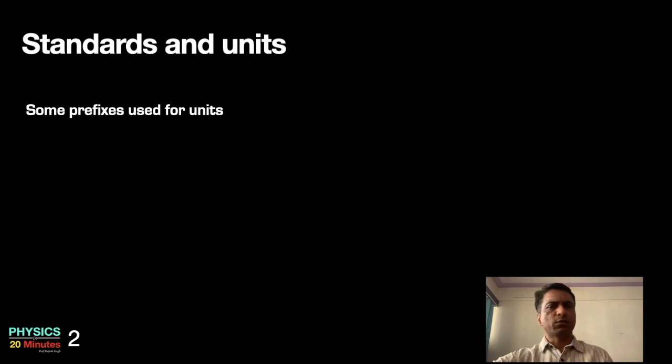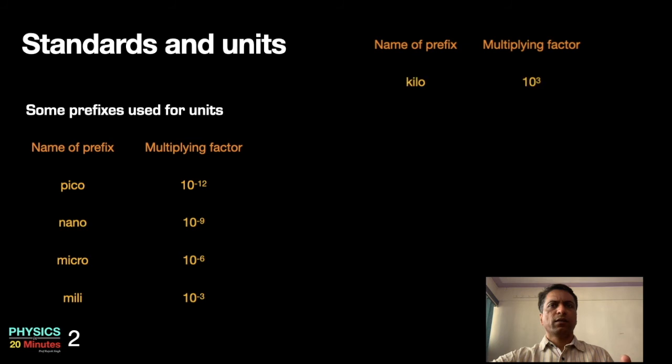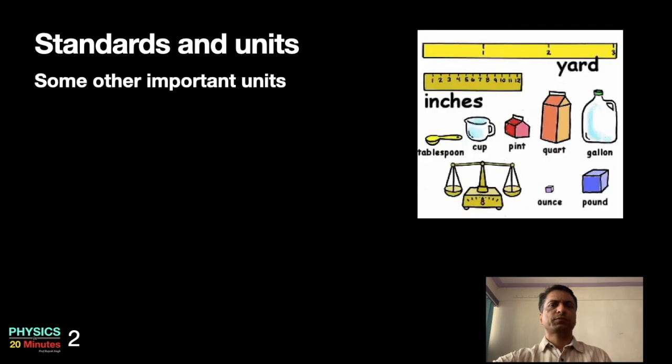Apart from these standard units, you will encounter some prefixes which are used for the units. I will list the names of the standard prefixes and multiplying factor. These are standard prefixes in the sense that they can be used for any units. Pico: 10 power minus 12. You can write picometer, picogram, or picosecond. Nano: 10 power minus 9. Micro: 10 power minus 6. Milli: 10 power minus 3. Kilo: 10 power plus 3. Mega: 10 power plus 6. Giga: 10 power plus 9. Tera: 10 power plus 12. These were the SI or standard units and standard prefixes.